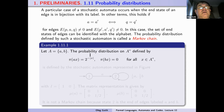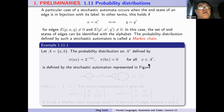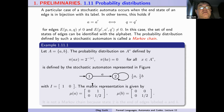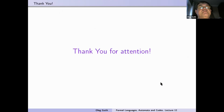The probability distribution on the free monoid A-star is defined by: pi(a^x) equals e to the power of minus the length of x, and pi(b^x) equals zero for all x belonging to A-star. This is defined by the stochastic automaton presented in the following figure. The matrix A is of the following form with entries one and zero. The matrix representation is given by mu(a) and mu(b) as the following matrices. It is not a Markov chain because state two is the end of edges labeled both a and b.